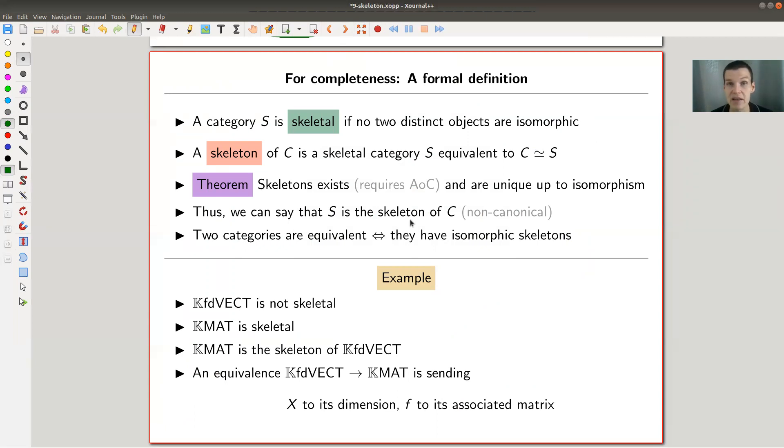And that's kind of the definition then of a skeleton if you want. You just get rid of too big isomorphism classes of objects. A category S, I call it S, is skeletal if no two distinct objects are isomorphic and all isomorphism classes are as small as they can be. A skeleton of a category is just a skeletal category S equivalent to C. The theorem is skeletons exist and they're unique up to isomorphism. You can check equivalence of categories if they have isomorphic skeletons.